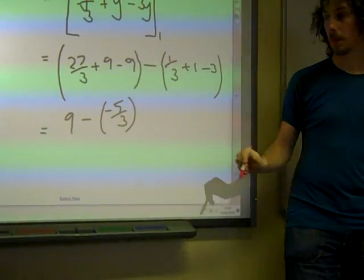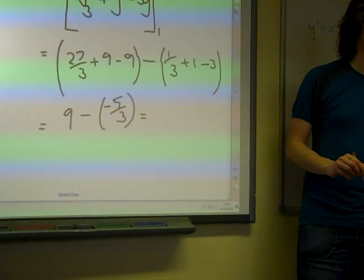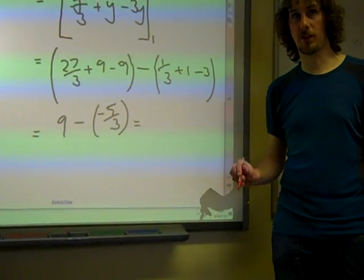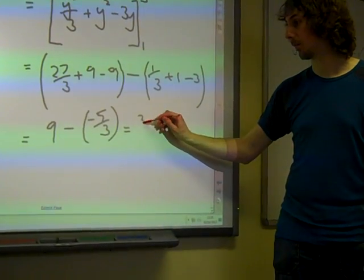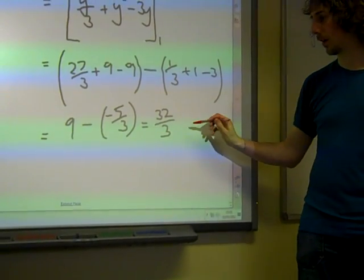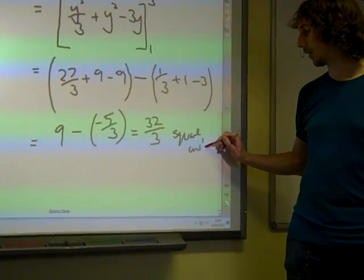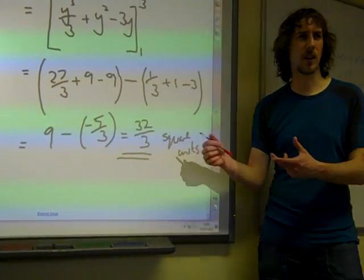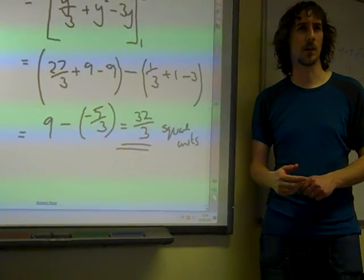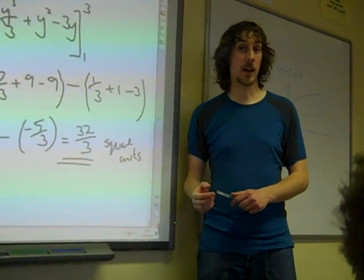And so we've got 9 + 5/3, which is 32/3, or 10 and 2/3. And square units. Did you write that in the exam? I think we should acknowledge that it's an area rather than just a length that we've... And there we go.